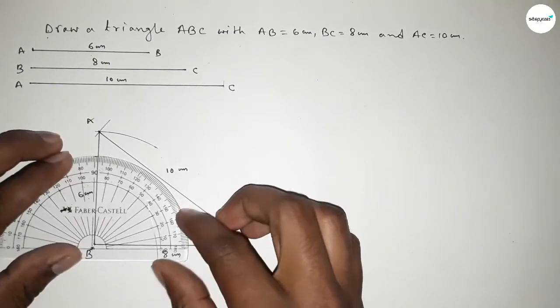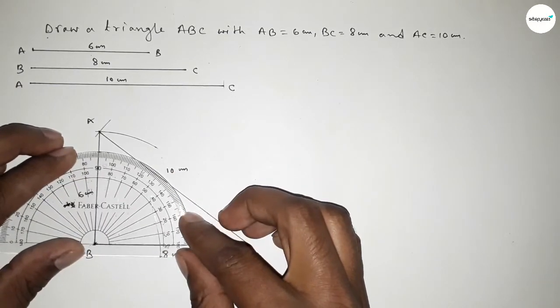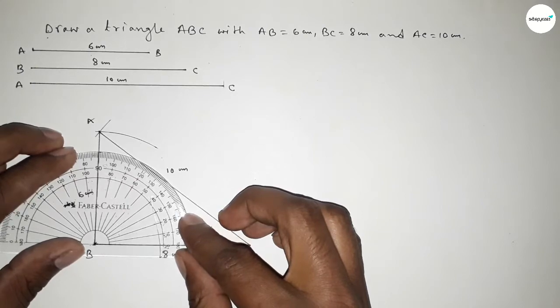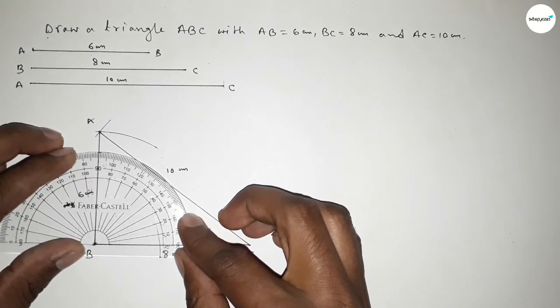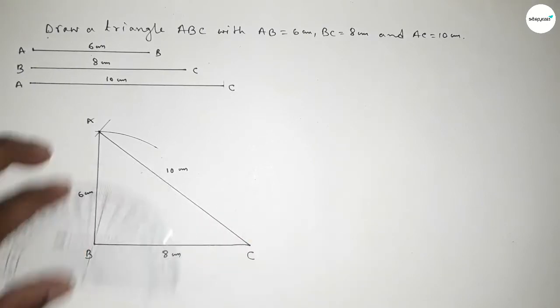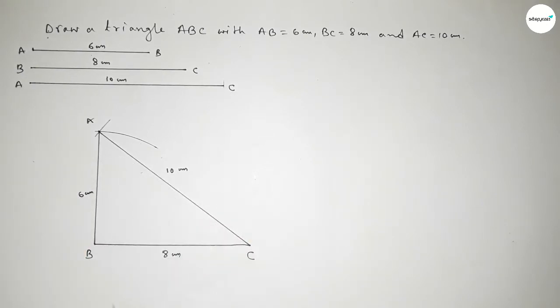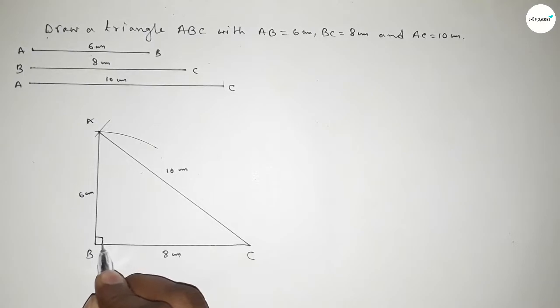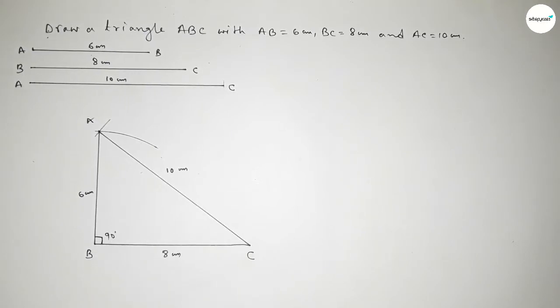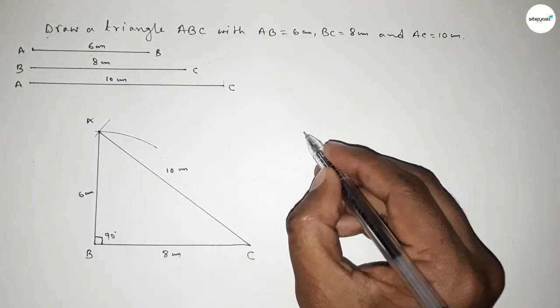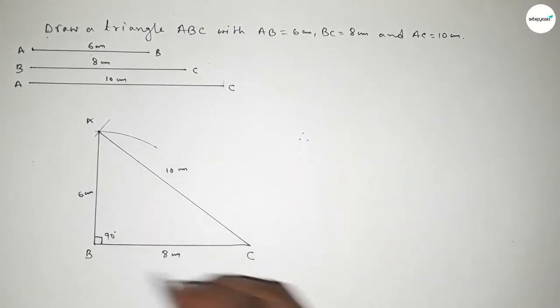Now checking the angle — this is a right angle triangle. This is a 90-degree angle, perfectly. So this is a right angle triangle with a 90-degree angle.